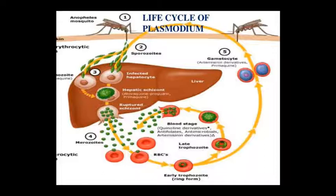The RBC is infected — this is called the early trophozoite stage, also known as ring form. When the ring form grows larger, it is the late trophozoite stage. Then the trophozoites fill the blood cells — this is the blood stage. Here quinoline derivatives, anti-folate, anti-microbial, and artemisinin derivative drugs act.